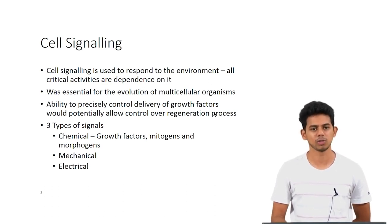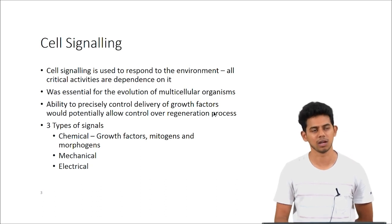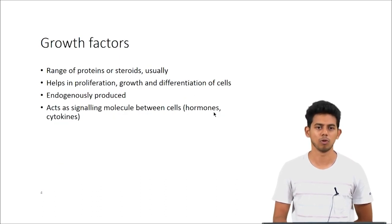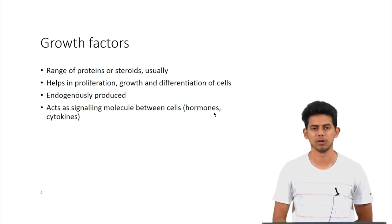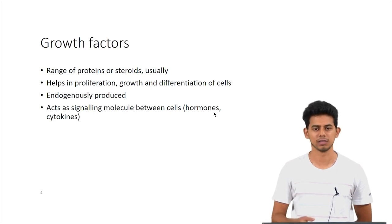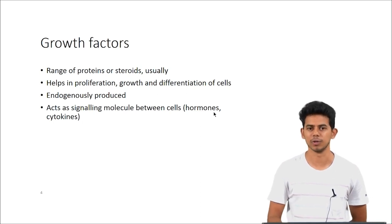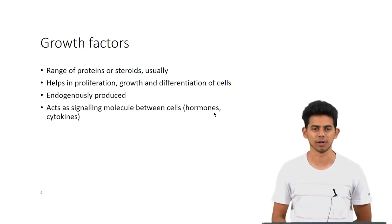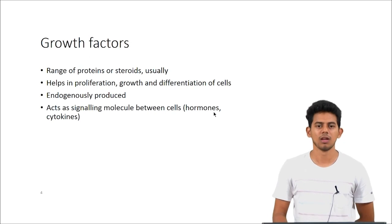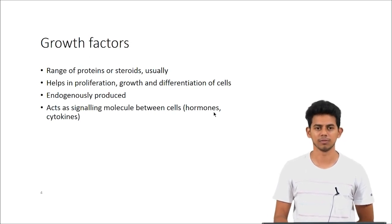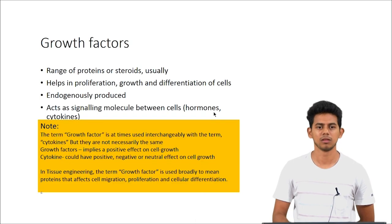When it comes to chemical signals, there are growth factors, mitogens and morphogens. Growth factors are small soluble proteins produced by cells themselves, and they act as signaling molecules between cells like hormones and cytokines. They help in proliferation, growth and differentiation of cells.